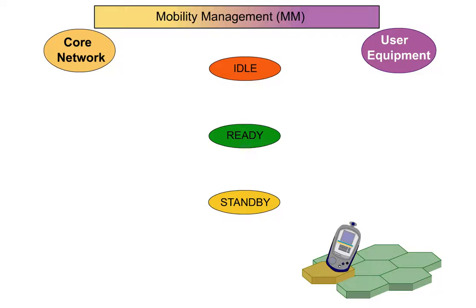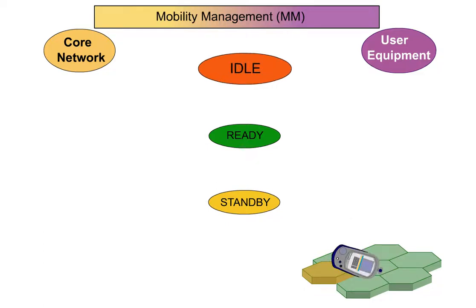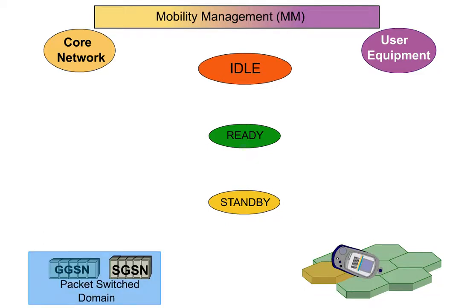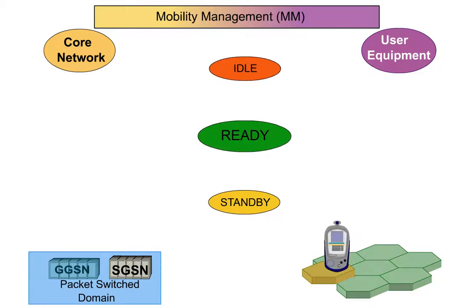First, the user equipment is in the idle state. It is not connected to the packet switched core network. In order to change to ready state, the user equipment must be logged on to the network. In this case, the procedure is called GPRS attached.